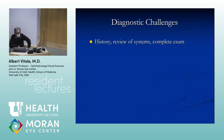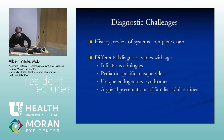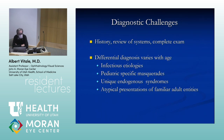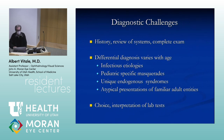Review of systems and complete exam are hard to obtain — it's difficult to get that from the kid or the parents. The differential diagnosis in children varies with age. There's an over-representation of infectious diseases, pediatric-specific masquerades like retinoblastoma, unique endogenous syndromes like JIA, and atypical presentations of familiar adult diseases like sarcoid. Lab test choice also varies — ACE is classically elevated.